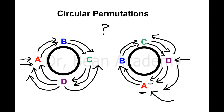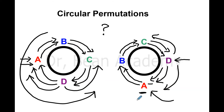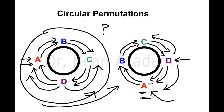The reason they look different is that the whole circle has simply been rotated by 90 degrees in the counterclockwise direction. There is no actual change in the relative positions of the four letters. So they are not two different permutations — they are actually the same permutation.